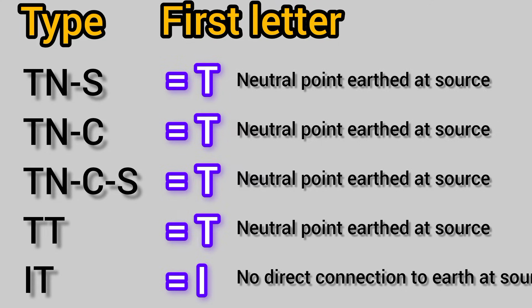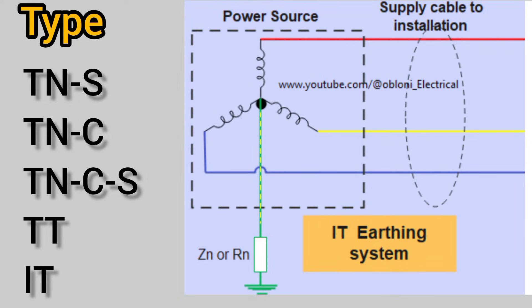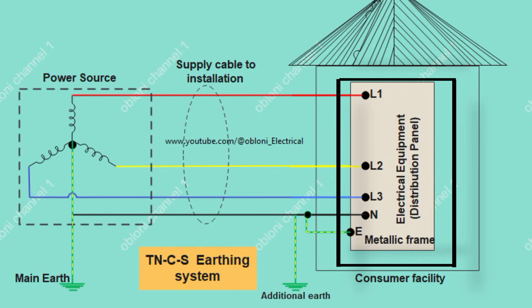The first letter denotes the source of power from a star-connected winding. If the first letter is T, it means that the star point of the source is solidly connected to earth. If the first letter is I, it means the star point of the source, or the star point of the transformer, is not directly connected to earth. The second letter refers to the consuming equipment that needs to be earthed — in this case, the consumer installation.